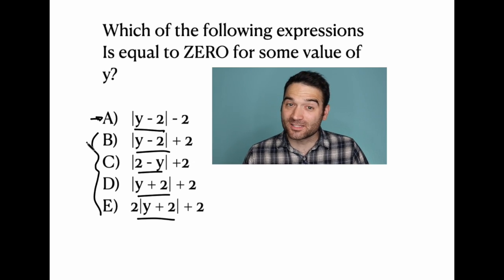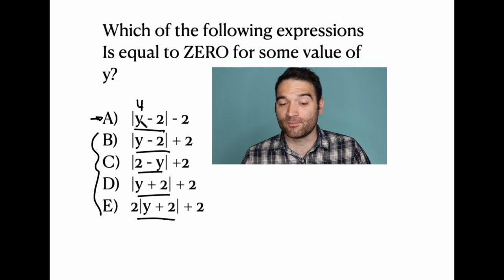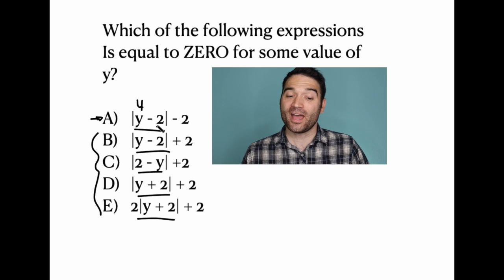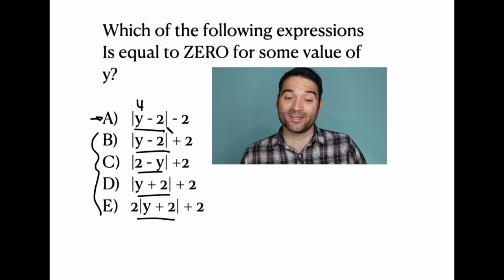Whereas a does allow us that, and here's how. We could make y equal to four, and if we make y equal to four, then we have four minus two, and the absolute value of that is two, and two minus two is zero.